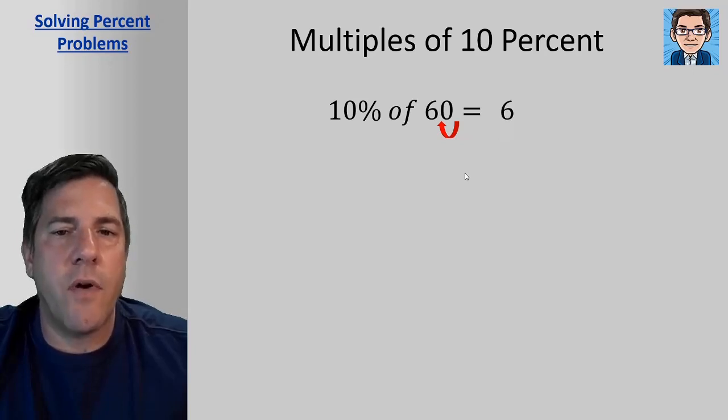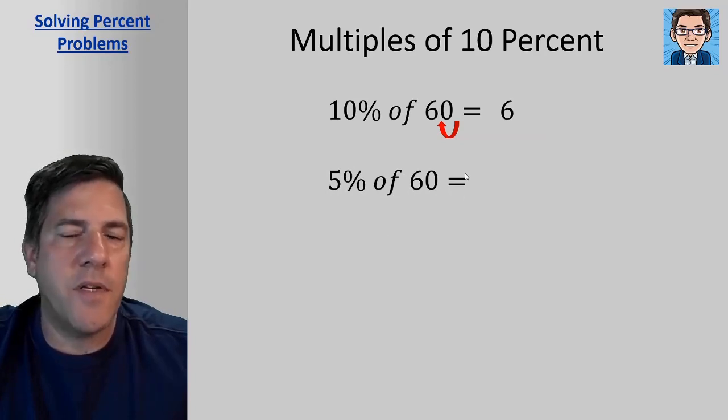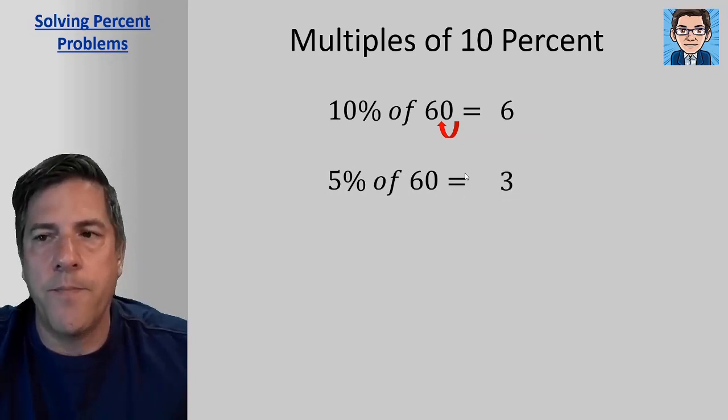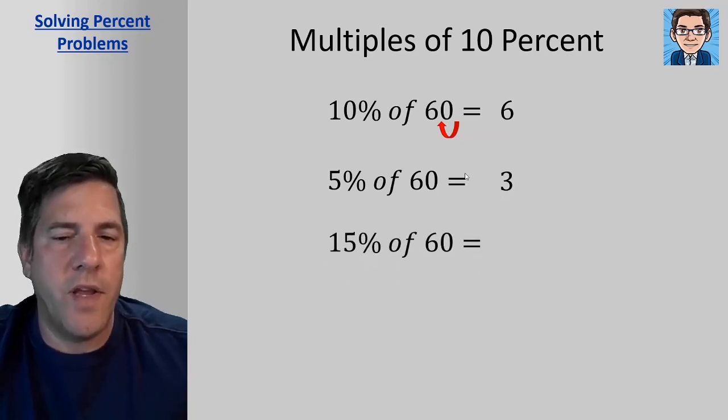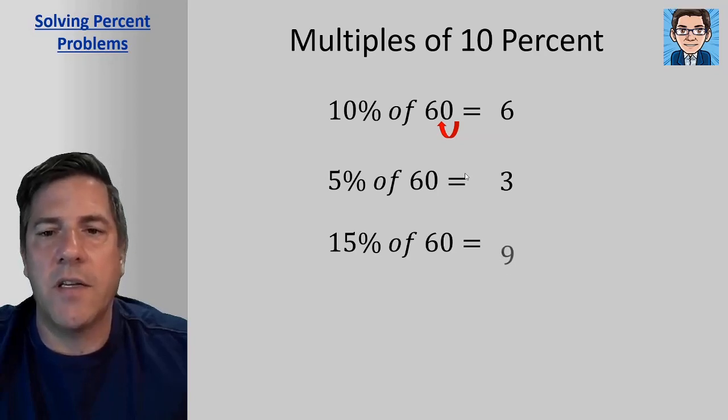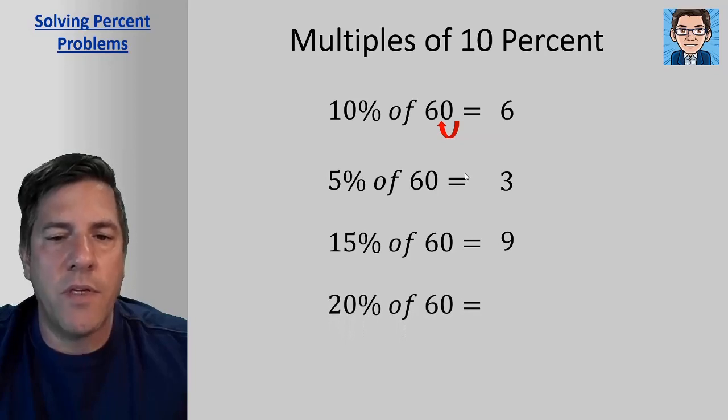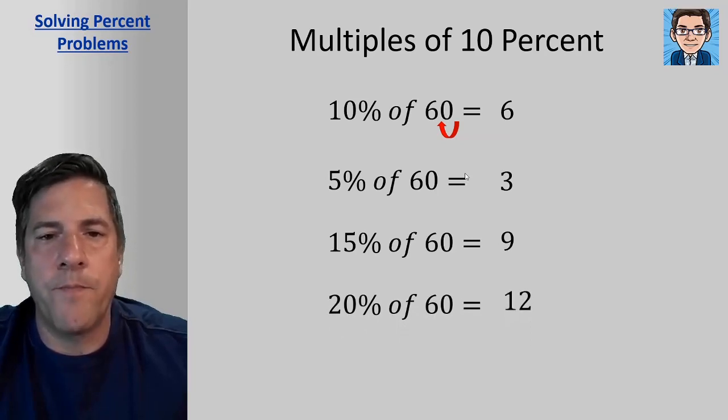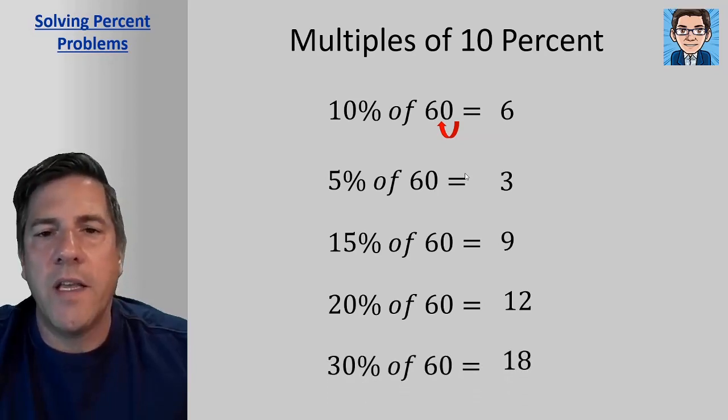So then we can use that for other multiples as well. Five percent, if 10 percent is six, then five percent is just going to be half of that or three. If we did 10 percent and five percent, we would get 15 percent or nine. If 10 percent is six, then 20 percent is going to be 12, we just double it. And if 10 percent is six, then we can triple it to get 30 percent or 18. So if you've got multiples of 10 percent, they're pretty easy to work with. Just figure out what 10 percent is first and then take multiples from there.